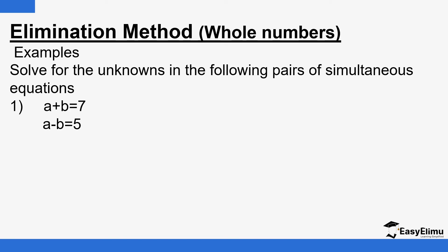We are going to use the elimination method. There are a number of methods to find the values of the unknowns, and we'll be posting more videos covering those. Now, in the elimination method with integral coefficients, we start by eliminating one of the unknowns. In the previous example we had only one unknown; now we have two. So we have to start by eliminating one of them. We must make sure that the coefficients — the numbers written before the variable, like 2 — are the same for at least one variable. First, you arrange the equations consistently: the term containing a, then the term containing b, then the constant.